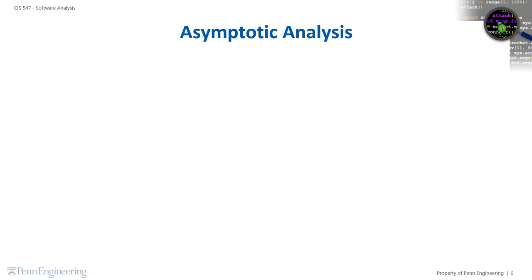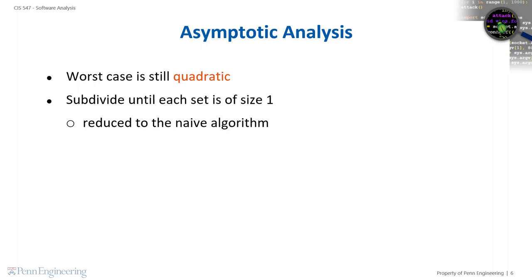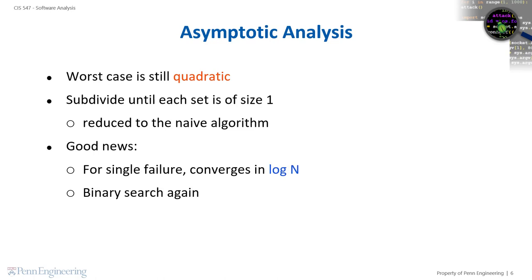The worst case complexity of the delta debugging minimization algorithm is still quadratic in the number of elementary changes — it could be the case that we subdivide until reaching maximum granularity and then remove one change at a time. The good news is that in the case where we find a failure in either delta_1 or delta_2 in each iteration, convergence to the 1-minimal test case takes only a logarithmic number of tests, much like binary search.